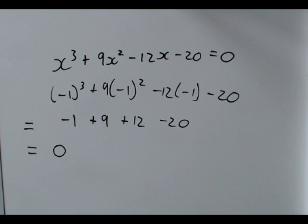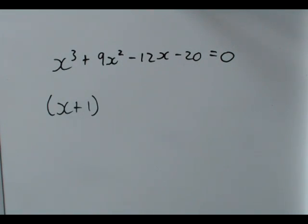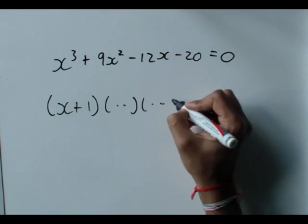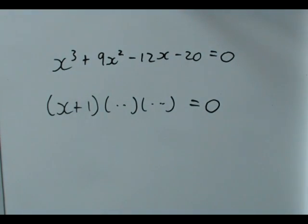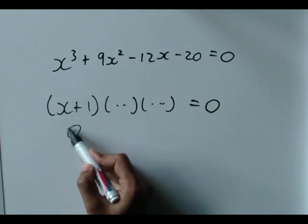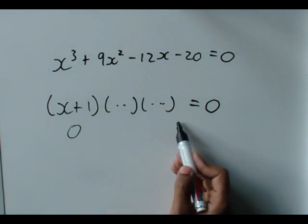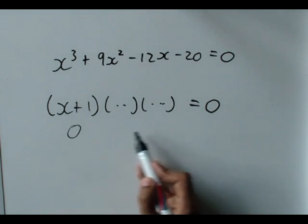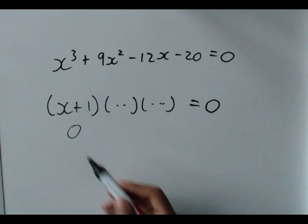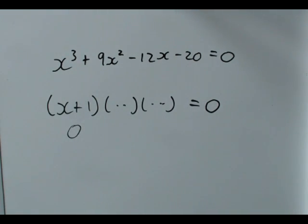And what that means is, x plus one is a factor. Now, why x plus one? It's because if we had the factorized version, we would have this bracket and something else. And something else, possibly, is equal to zero. So, if I know minus one works, x plus one, if I put a minus one in here, this bracket becomes zero. And this is all multiplied together because we factorized it, so this whole side becomes zero, which is what we want it to be. So, x plus one is going to be in our solution.